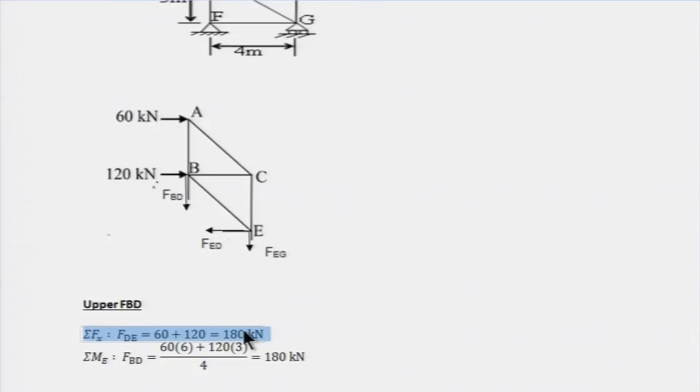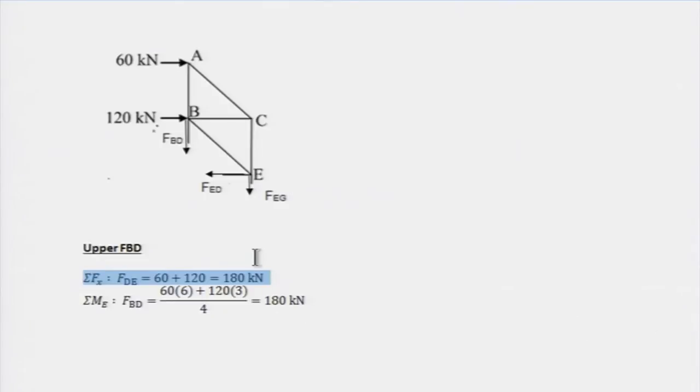That is 180 kN. Remember here I have already taken this as a tensile force because this is outward direction. So member is in tension. Therefore I have FDE solved. And therefore, now FBD, how do I solve FBD? Simply take moment about E. The idea all the time is how can I solve the given unknown using one equilibrium condition.